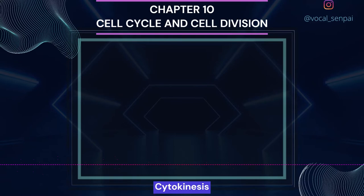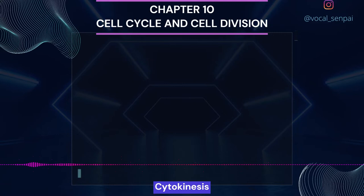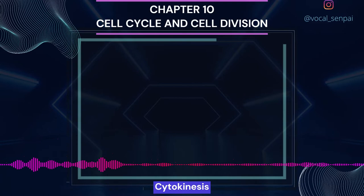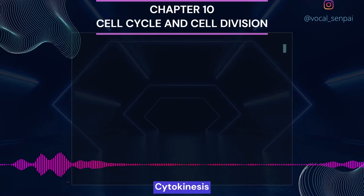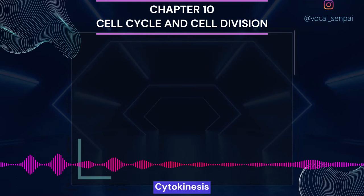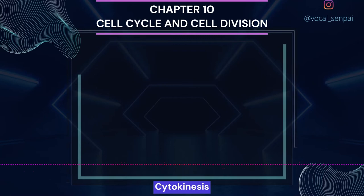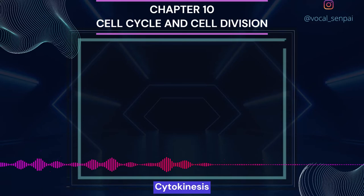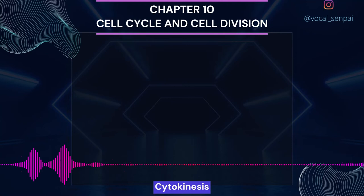Plant cells, however, are enclosed by a relatively inextensible cell wall and therefore undergo cytokinesis by a different mechanism. In plant cells, wall formation starts in the center of the cell and grows outward to meet the existing lateral walls. The formation of the new cell wall begins with a simple precursor called the cell plate, which represents the middle lamella between the walls of two adjacent cells. At the time of cytoplasmic division, organelles like mitochondria and plastids get distributed between the two daughter cells. In some organisms, karyokinesis is not followed by cytokinesis, resulting in a multinucleate condition called syncytium, for example, liquid endosperm in coconut.